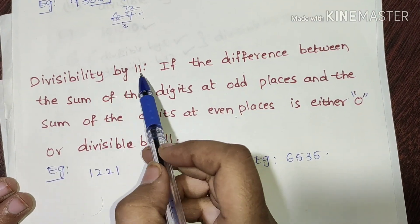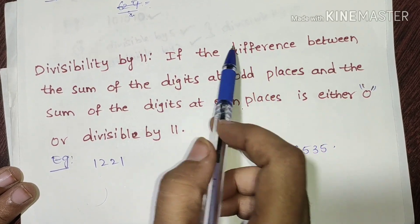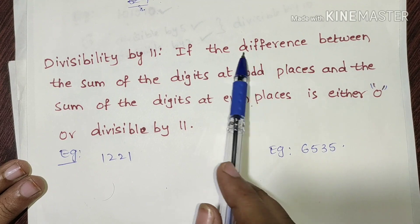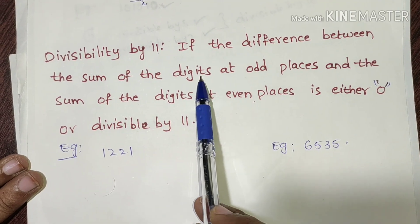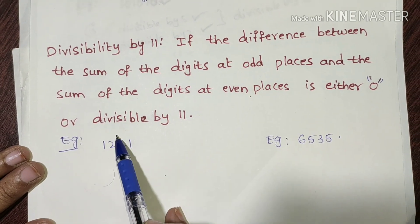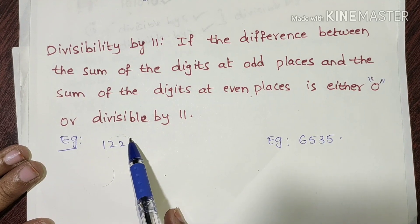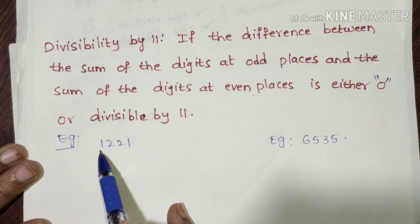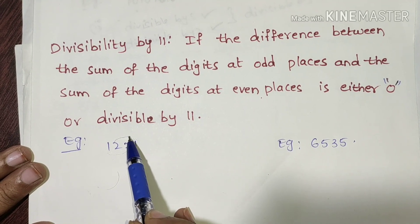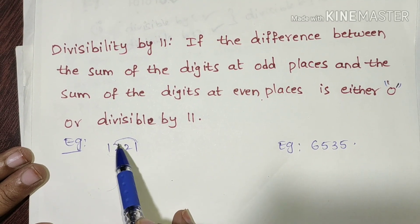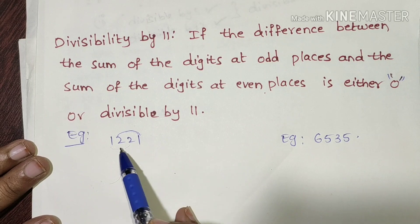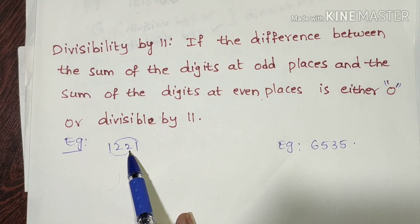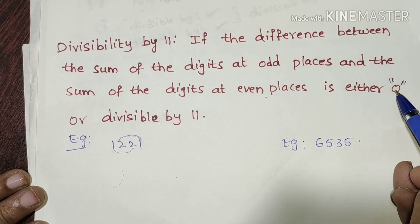Divisibility by 11: the condition is to find the difference between the sum of the digits at odd places and the sum of the digits at even places. If the difference is 0 or a multiple of 11, the number is divisible by 11.